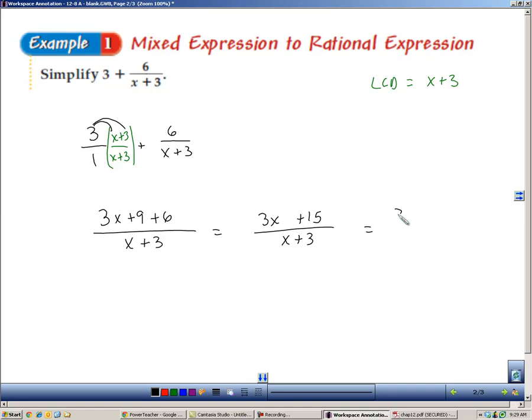If I pull a 3 out to check and see if I can cancel anything, I'm left with an x plus 5, which is over x plus 3. That doesn't really help me at all. So this is an okay answer.